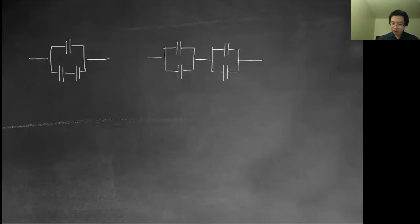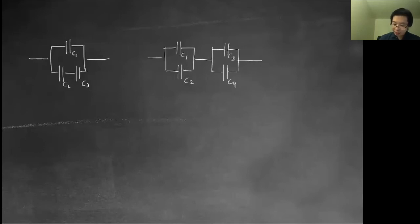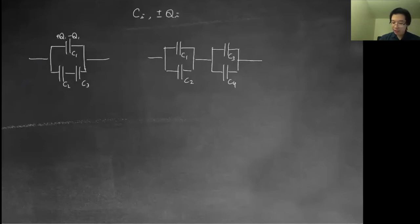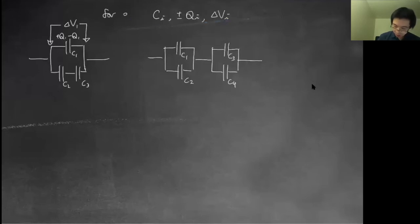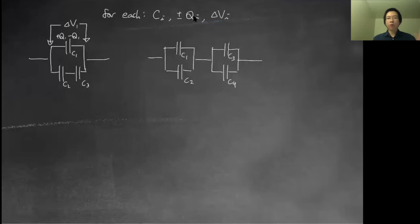The key thing is to know how all the variables relate. Let's call them c1, c2, c3, c4. For each capacitor ci, you should label plus q1 and minus q1 on the plates, and it will have a potential difference across it. The whole goal of all these capacitor-in-circuit problems is to understand the relationship between all these variables.